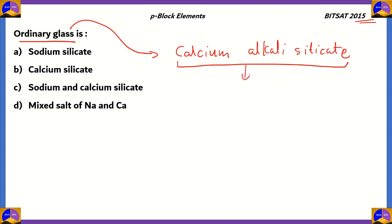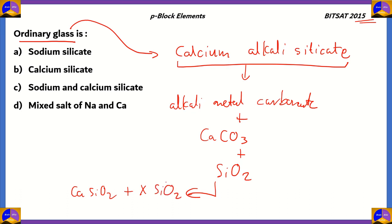It's created from the reaction alkali metal carbonate plus calcium carbonate CaCO3 plus SiO2. From here, you will get both CaSiO2 and the alkali with SiO2. Let's take that as XSiO2.